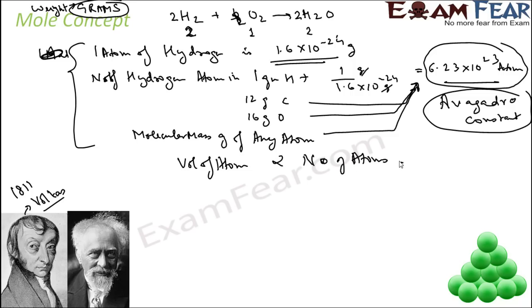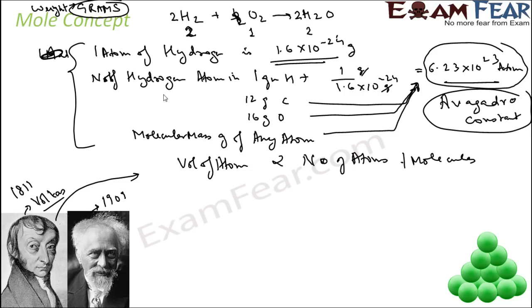The volume of a gas is proportional to the number of atoms or molecules at a given temperature and pressure — this is what he proposed. But the actual proportional value was not determined. In 1909, Jean Perrin determined this Avogadro constant. He found that 1 gram of hydrogen has 6.023 × 10²³ atoms.